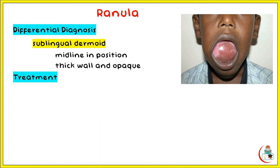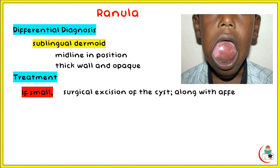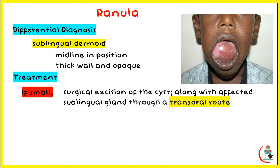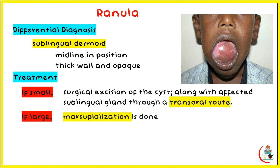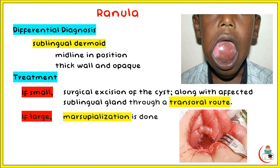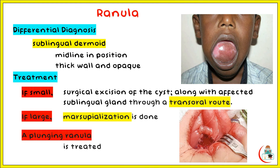The treatment is as follows. If a small cyst, surgical excision is indicated along with the affected sublingual gland through a transoral route. If a large cyst, it is better to arrange for marsupialization. A plunging ranula is treated by cyst excision through a cervical incision.